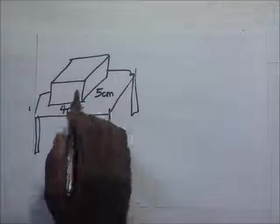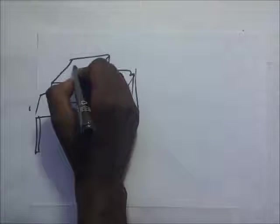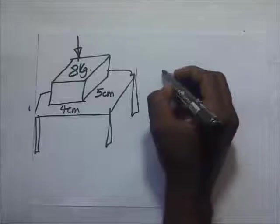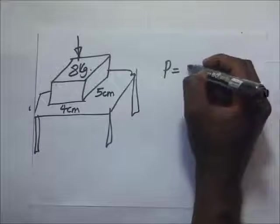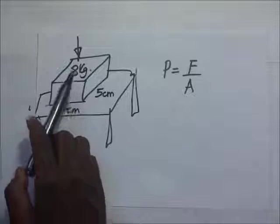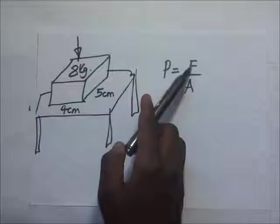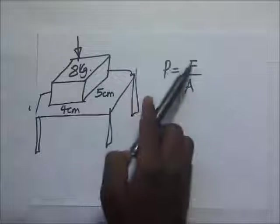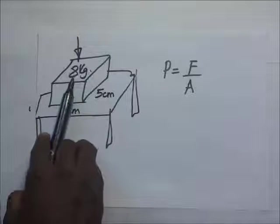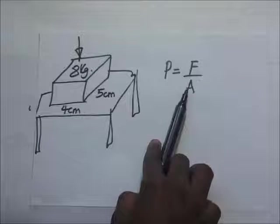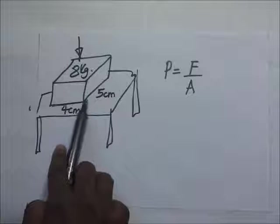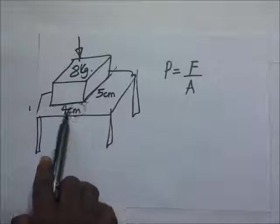So this face is 4 centimeters by 5 centimeters, and the mass of this box is 8 kilograms. From our formula, pressure equals force over area. We do not have the force but we have the mass of 8 kilograms, so we can find the force — force equals mass times gravity, with gravity equal to 10, giving us the force in Newtons. For the area, it is going to be 4 times 5, but this is in centimeters so the area will be in centimeters squared.